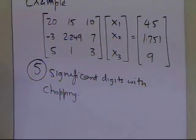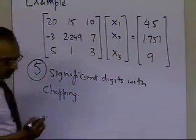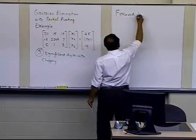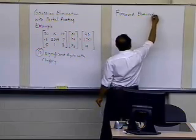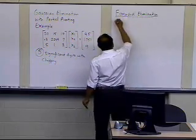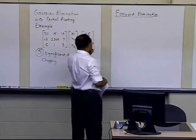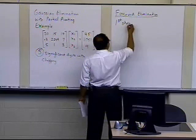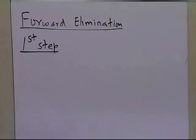So let's go ahead and see how we're going to conduct the steps of forward elimination and back substitution to solve these three equations with three unknowns. The first thing we're going to do is forward elimination. Since we have three equations and three unknowns, we'll have two steps of forward elimination. So here is the first step of forward elimination.